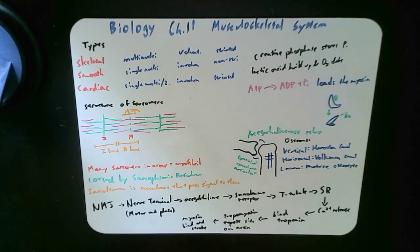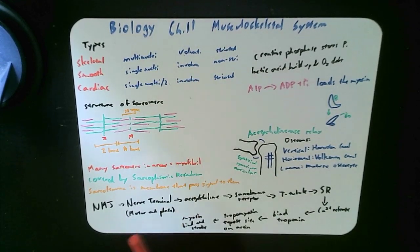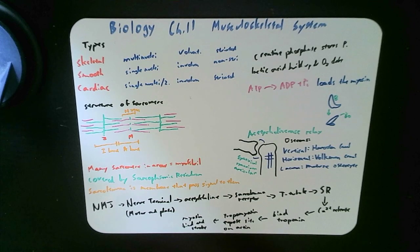We also have when multiple sarcomeres are aligned together, they're called myofibro. Myofibro extends, gets into more bands and bundles up together into the whole bigger muscle parts.